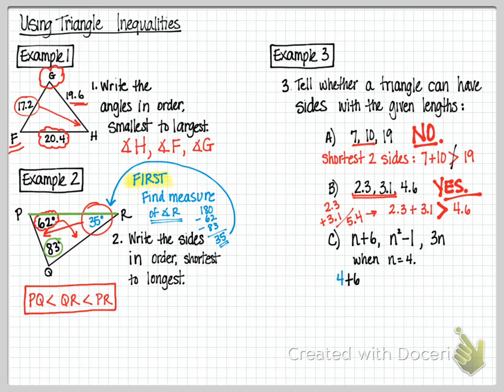In part C, step one is you have to plug in the 4 for the n, so you get 4 plus 6, then you're going to have 4 squared minus 1, and 3 times 4, which is going to give you the three lengths of 10, 15, and 12. 10 and 12 being the shortest, adding those together, they are greater than 15, so yes, it makes a triangle.